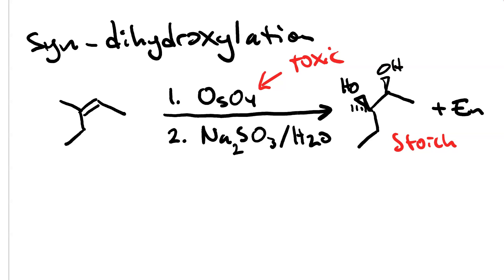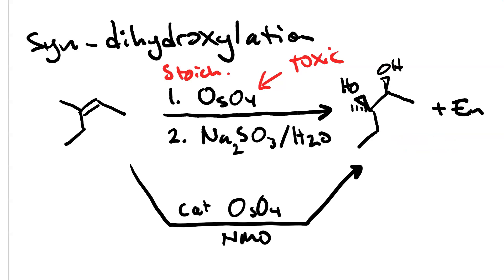There is a better process that is catalytic. The catalytic process involves using a catalytic amount of osmium tetroxide, so a much smaller amount of the toxic stuff, and then a stoichiometric amount of NMO or T-butyl hydroperoxide to regenerate the osmium tetroxide. So this produces less waste. Catalytic is better than stoichiometric.